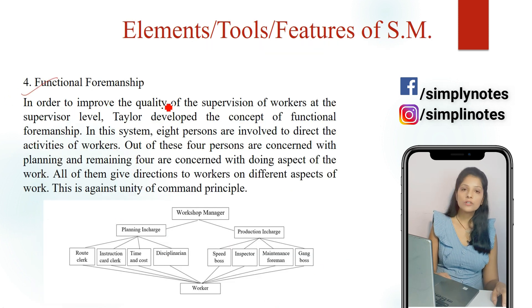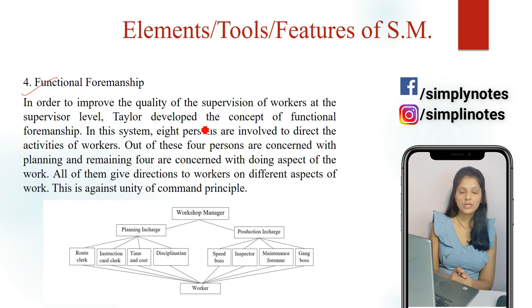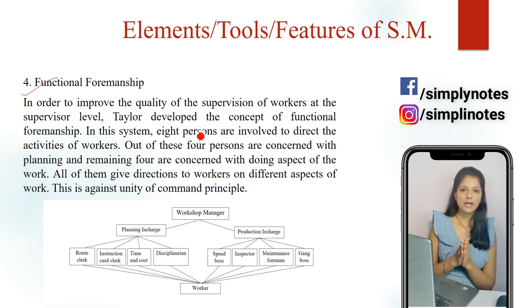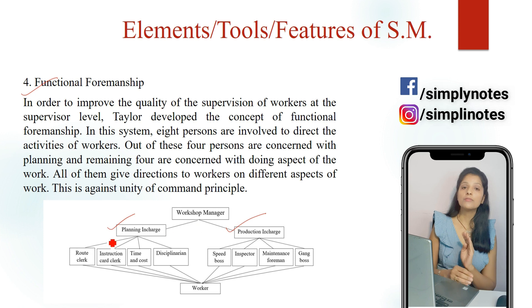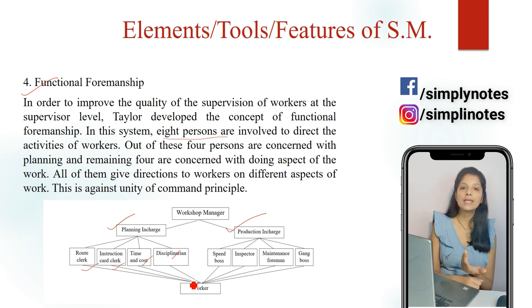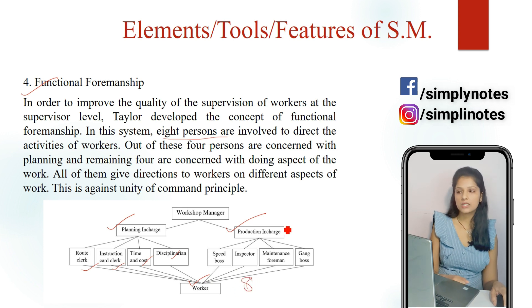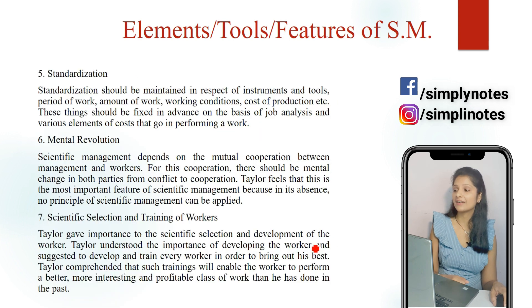The fourth feature is functional foremanship. Taylor evolved the concept of functional foremanship based upon specialization of functions. He suggested that the planning department should be divided into two groups — a planning forum and a production or workshop forum — and in each group there should be four supervisors, meaning in total there should be eight supervisors. So one worker would receive instructions or orders from eight supervisors — this was the concept of functional foremanship as given by Taylor.